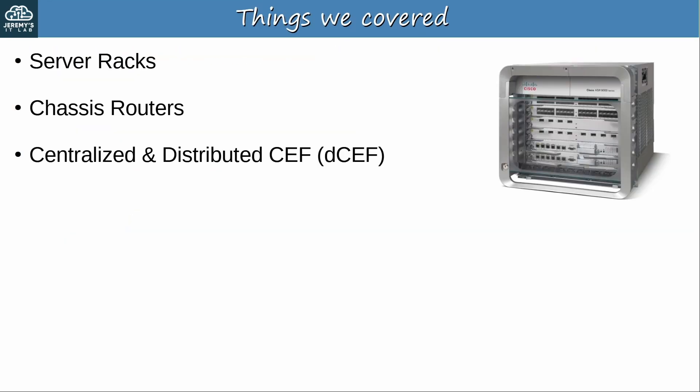Here's what we covered in this video. First we looked at server racks, used to mount server and network hardware. Then we looked at chassis routers. Note that although I used the term routers throughout this video, there are also chassis switches and firewalls too. However, since we're focusing on the layer 3 forwarding process of CEF, I used the term router throughout this video. The final topic was centralized and distributed CEF. In centralized CEF, the route processor of the chassis makes the CEF forwarding decisions. In distributed CEF, each line card is capable of doing CEF on its own, which is more efficient because each packet doesn't have to travel to the route processor card for forwarding — it can go straight to the egress line card. We will look at chassis routers again in future videos.